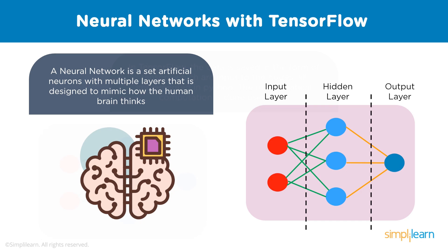Each node in a neural network can be taken as a perceptron, similar to a multiple linear regression. The perceptron feeds the signal produced by multiple linear regressions into an activation function, which may be non-linear. The activation function within each node determines the weightage of that node. In TensorFlow, data is saved as tensors which are the input to all nodes, implemented in Python. The computation within nodes — activation functions and hidden layer functions — is implemented in C++, which is faster than Python, making TensorFlow a very fast process.